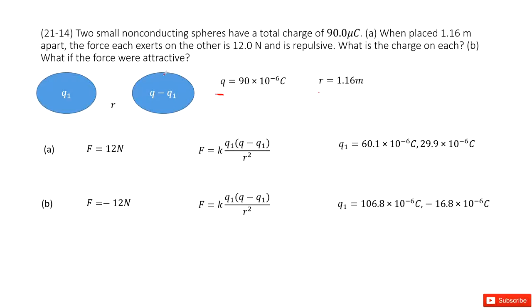The first one: if the electric force between these two charges is given as 12 newtons, can you find the Q1, how the electric charge is distributed? So in this case, we can find the magnitude of electric force by using Coulomb's law. F equals k times Q1 times the second charge, Q minus Q1, divided by R squared.